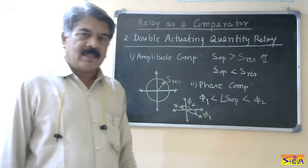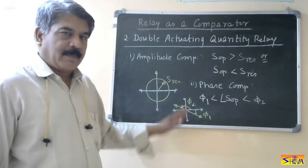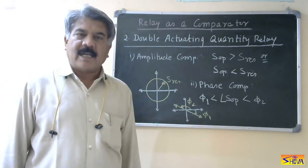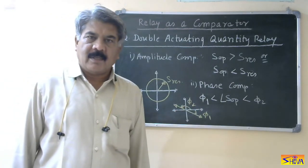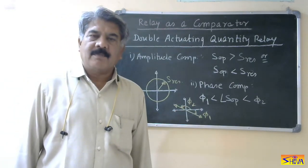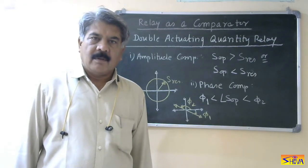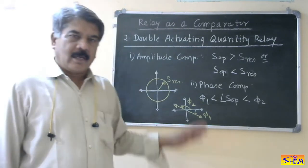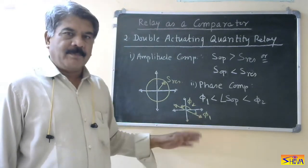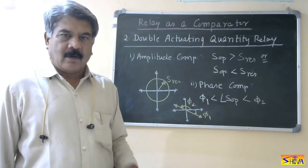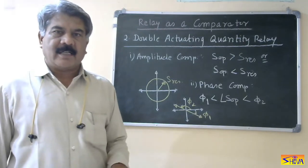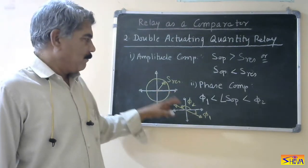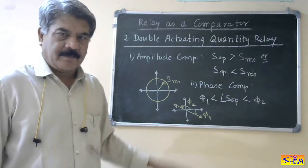The advantage of this type of comparator is that it provides the directional feature and it is reliable. But the drawback is that we cannot generate non-conventional characteristics — only conventional characteristics such as circle and straight line can be generated.